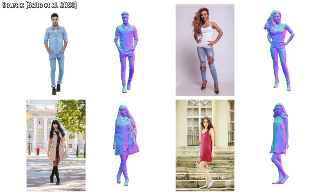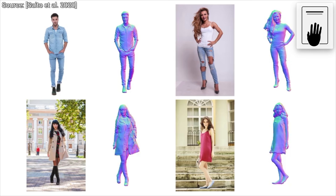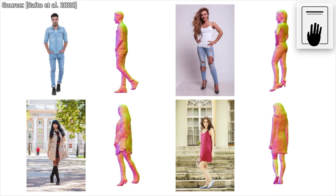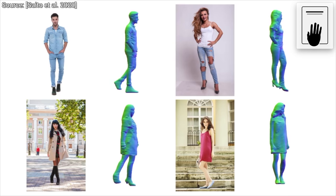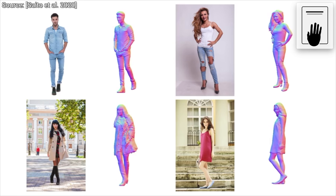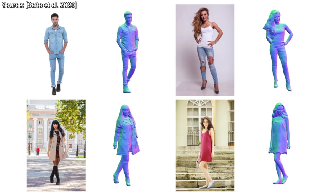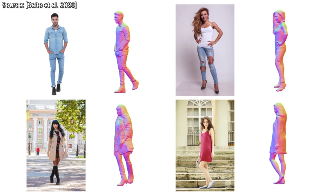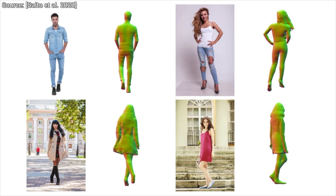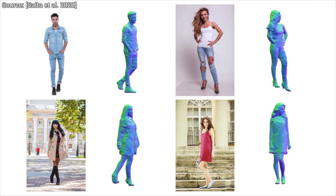Now hold on to your papers for experiment number two, because it can not only deal with still images on the front side only, but it can also reconstruct the backside of the person. Look! But hold on — that part of the data is completely unobserved. We haven't seen the backside. So how is that even possible?